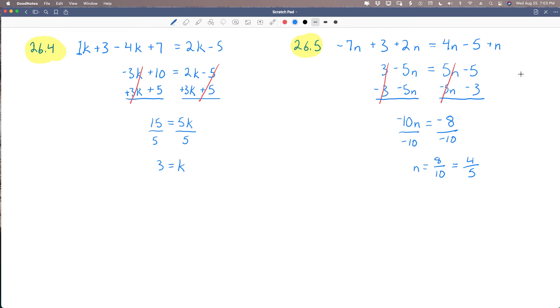So I repeated that process on 26.5. I had a negative 7n and a positive 2n. When I combine those, I have a negative 5n. And then I had a positive 3 and brought it down. On this side, I had a 4n and a positive n. And remember, there's always an invisible one there. So 4 plus 1 is 5n. And then I brought down my negative 5.